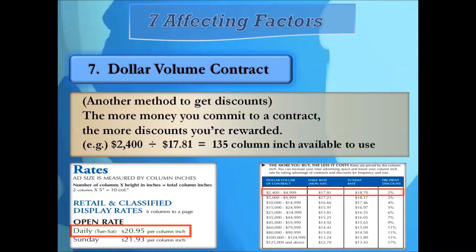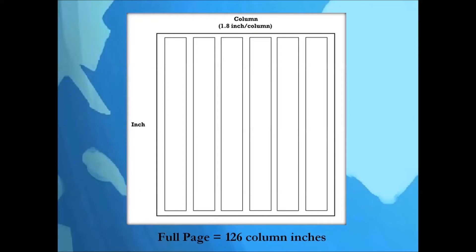Dollar volume contract is another way to get a discount. You fork over money upfront and commit to one of the tiers in the contract. For example, in the Bozeman Daily Chronicle the open rate is $20.95 per column inch. But if you sign a contract and pay $2,400 upfront, you get a discounted rate of $17.81 per column inch on weekdays. With that rate you can advertise up to 135 column inches before the fund is depleted — and since a full page is 126 column inches, you're pretty much broke after running one full page ad.